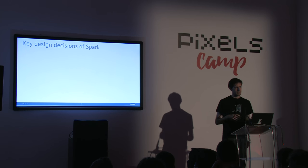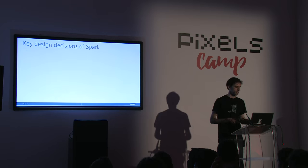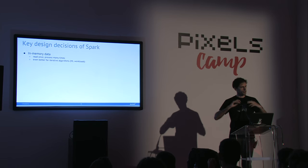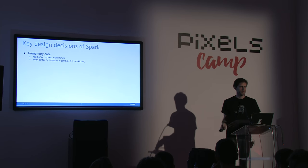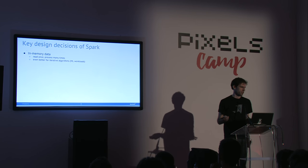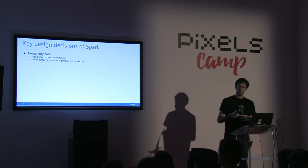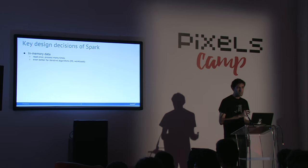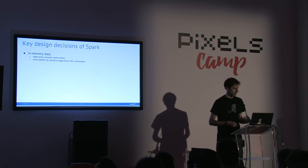Underlying this deployment architecture are key design decisions that have made Spark work really well in practice. First, it holds as much data in memory as it can. Even though your data is on disk somewhere, once you bring it into a Spark executor it will live mostly in memory if possible — depending on how much memory your machines have. This is really good for analytics and machine learning workloads, which are often iterative algorithms that have to go through the same data over and over again.